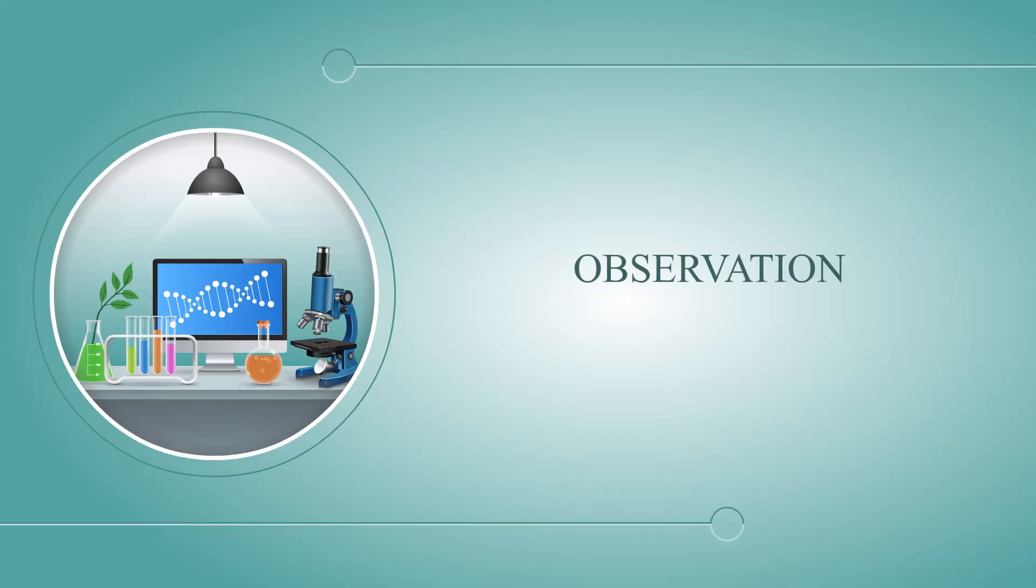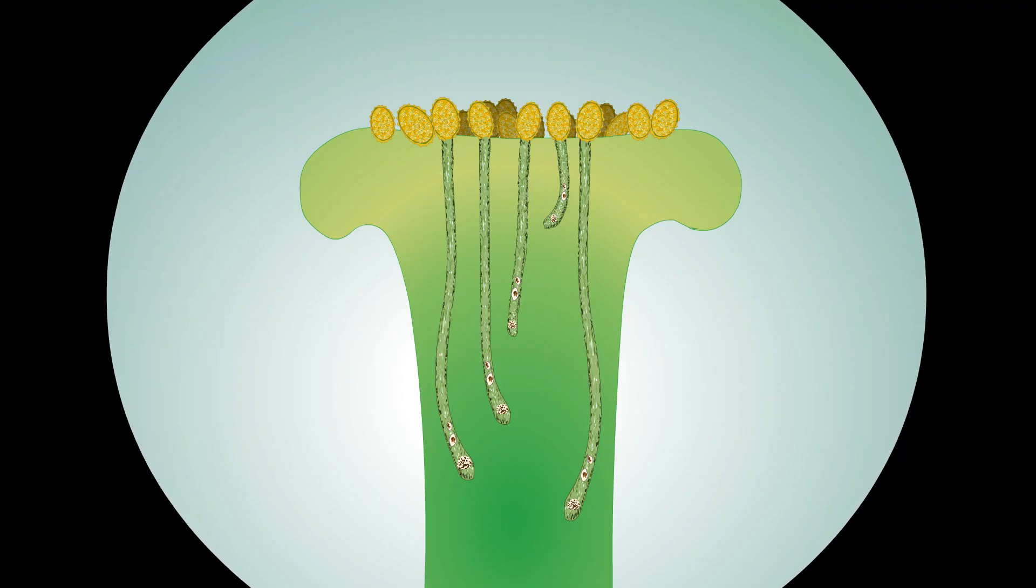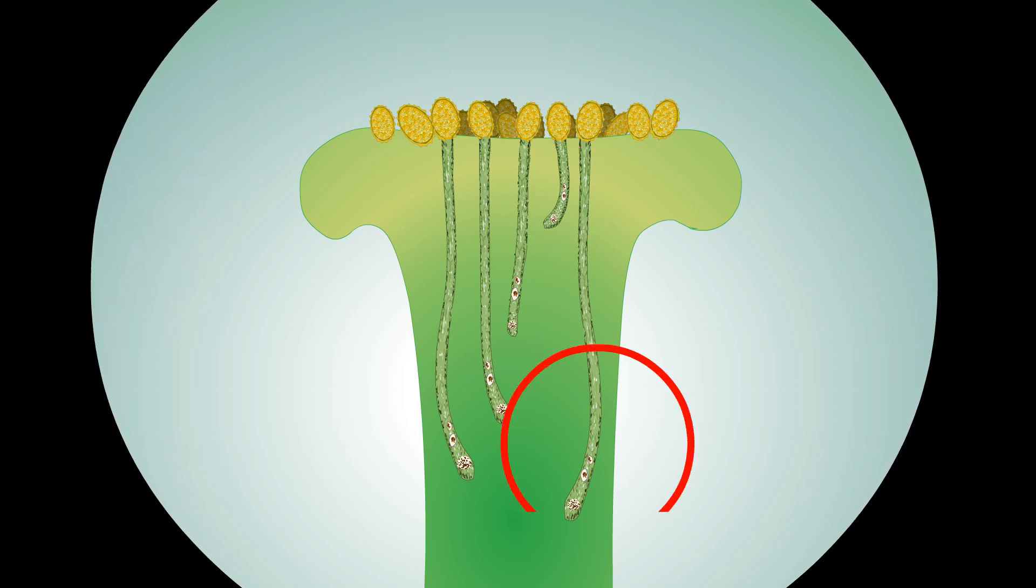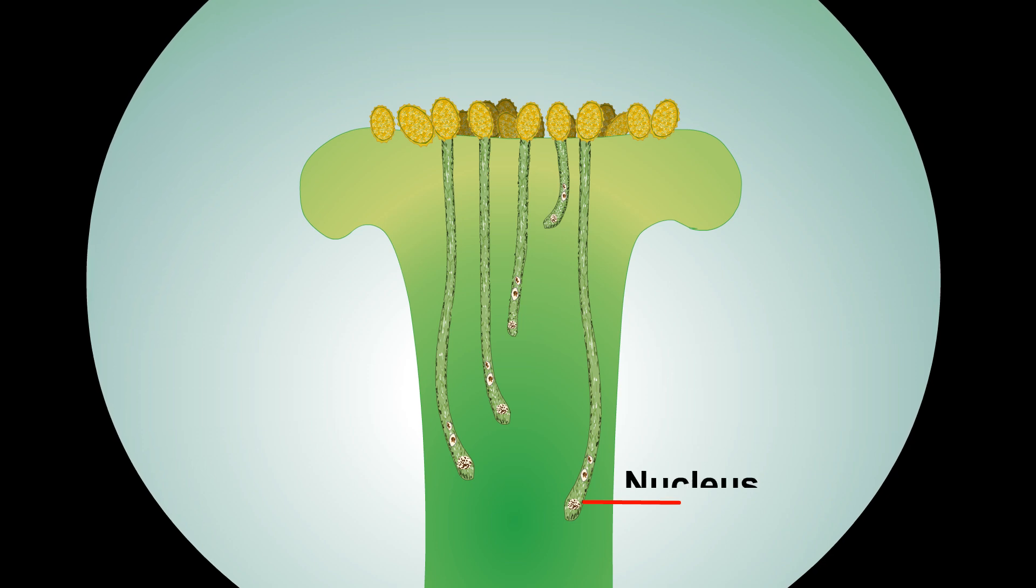Observation: We can observe different stages of germinating pollen grains traversing through the stigma and style. Some pollens are in early stages of germination while others have long pollen tubes. We can also observe the nucleus and male gametes inside the pollen tube.